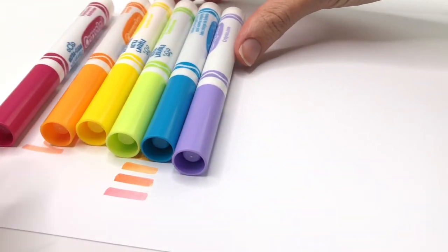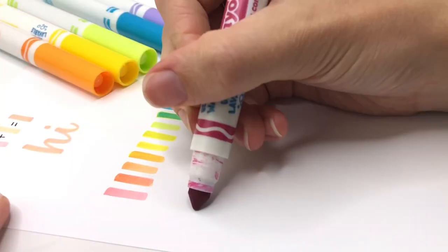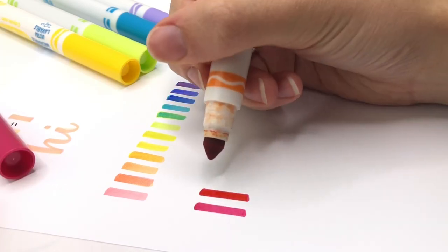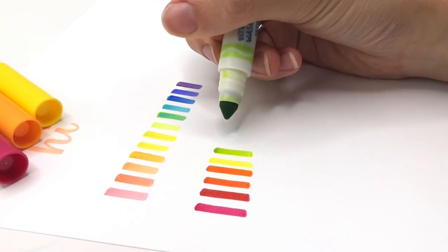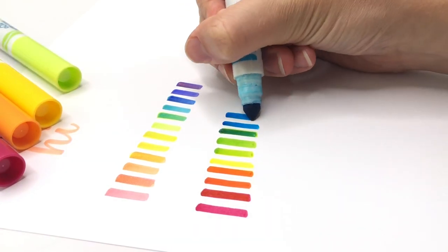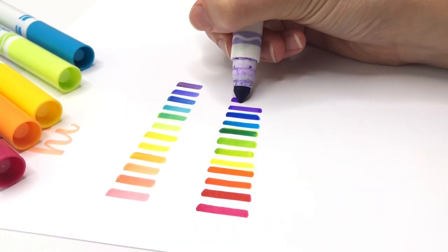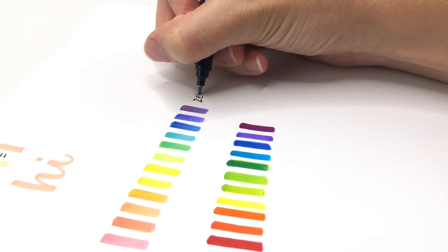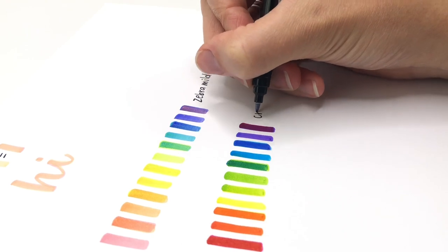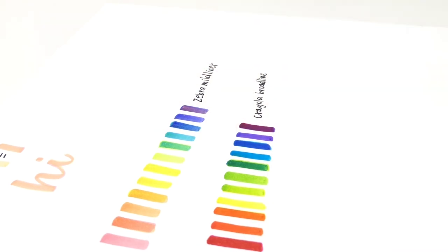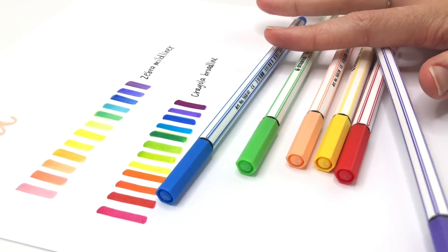So next I decided to try my Crayola markers because I thought these ones are not very transparent. Let's see if these work too. And as you can see, it did actually work. Not all the colors worked very well. So like the yellow, it doesn't really look great on the orange. I think the lighter color doesn't do as well on a darker color. But now let's move on to the next one.